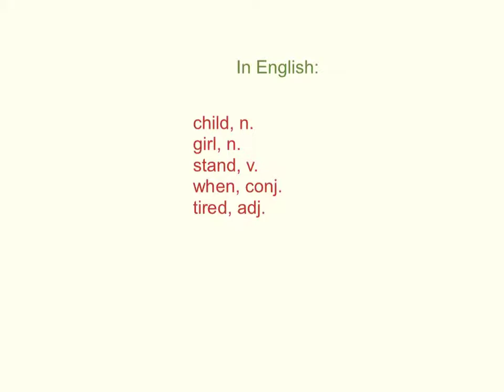Okay, so here are some English words as they would appear in the dictionary. Child is the word, that's the word. I'm going to start off really basic here, and then N indicates that it is a noun. In other words, you get the word and the part of speech.